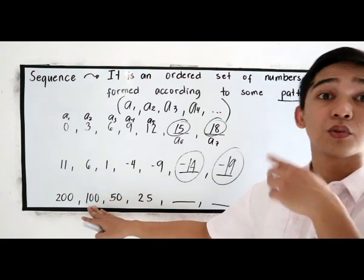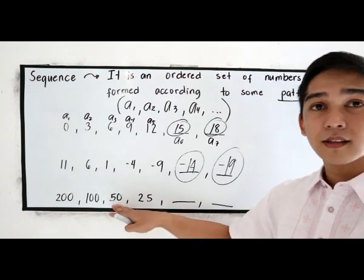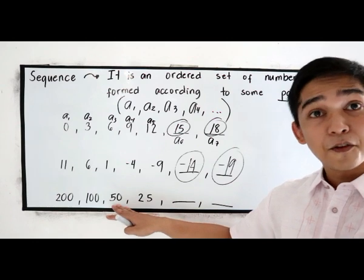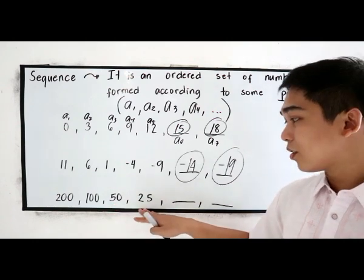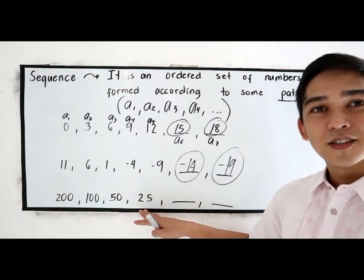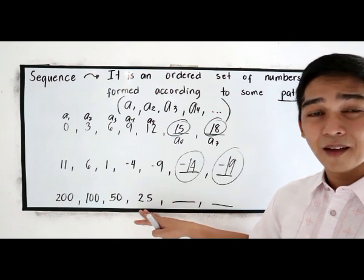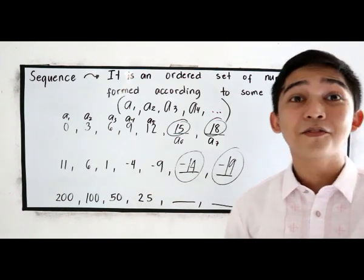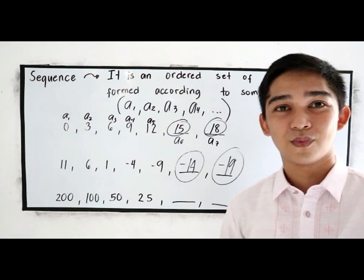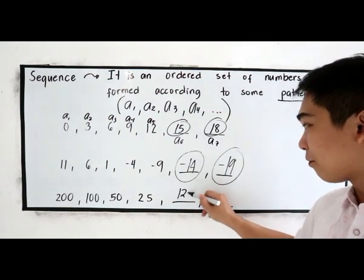100 if we're going to divide by 2, will give us 50. 50 divided by 2, 25. So the next step is 25 divided by 2. That is 12.5.